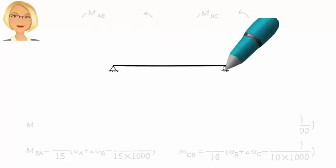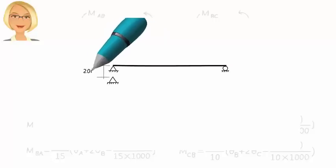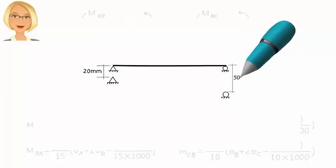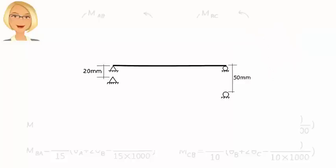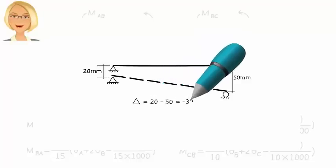Here is a question for you. If the left end of the segment settles by 20 millimeters and the right end settles by 50 millimeters, what value should we use for delta? Since delta is differential vertical displacement, we should use 20 minus 50, or negative 30 for delta. Why the negative sign? Because these end settlements force a clockwise rotation of the segment.